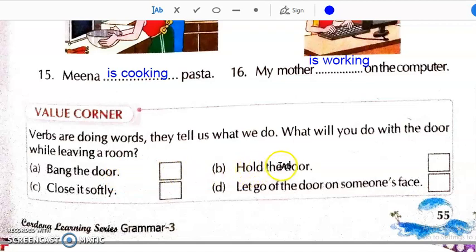Second, hold the door. Darwaza pakad ke khade rahoge. Close it softly. Dheeray se band karoge. And fourth one, let go of the door on someone's face. Ya toh agar koi wahan pe khada hai toh uske mooh pe jor se darwaza band karoge. So, from this which one will you do? Just click on this. Ideally, what should we do? We should close it softly.